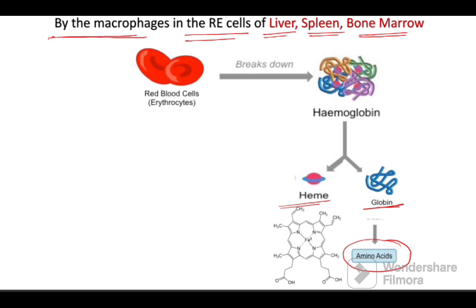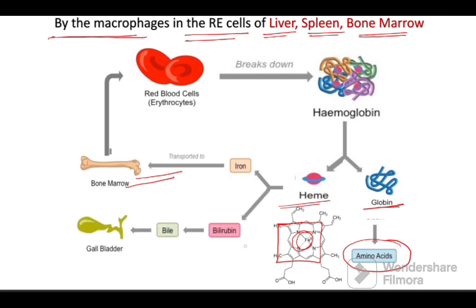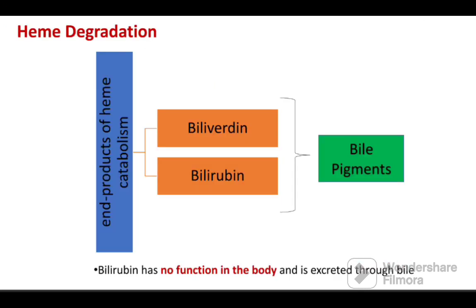Heme has an outer porphyrin structure and a center iron in the Fe2+ state. The center iron is transported to bone marrow where it is reutilized for erythropoiesis. The outer porphyrin structure is degraded to form bilirubin, which is excreted through bile via the gallbladder. The main end products of heme degradation are biliverdin and bilirubin, and both are called bile pigments.